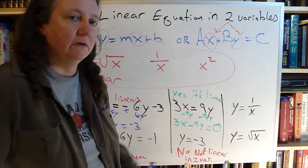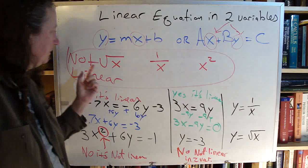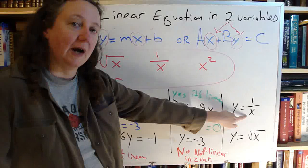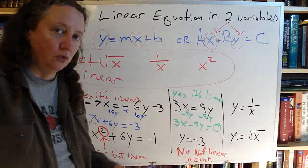Last two. y equals 1 over x. So I told you to watch out for three certain things: radical signs, fractions with a variable in the denominator, and exponents. Well, this is a fraction with a variable in the denominator. So no, that is not linear.